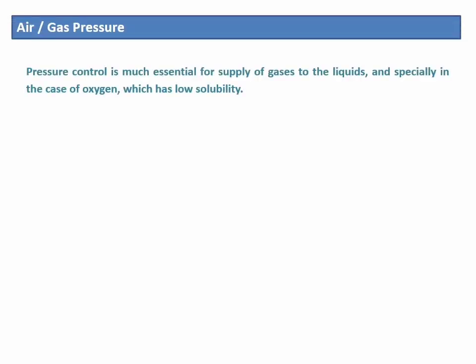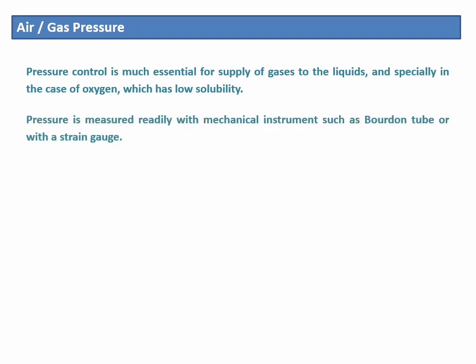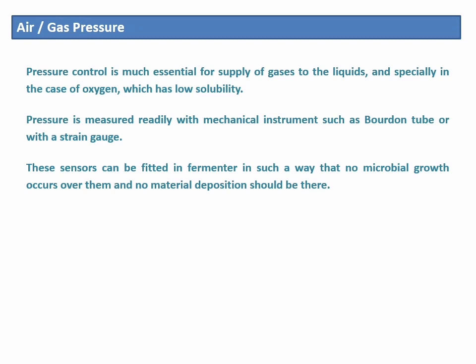Another factor is air pressure. Inside fermenters, the gas pressure is monitored very closely because aeration is important for all cells to survive and for their proper growth. To measure inside air pressure, a Bourdon tube or strain gauge is used. These sensors are installed in the fermenter in such a way that no material deposits on their surface and no microbial growth occurs on them.